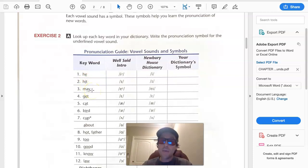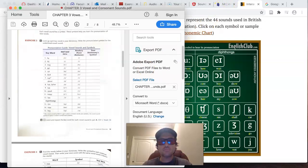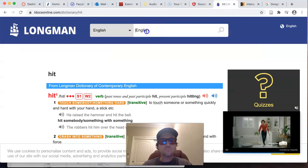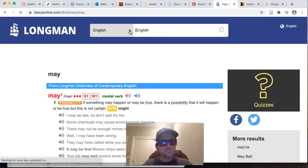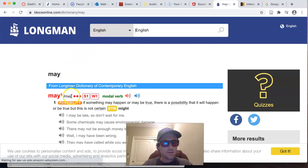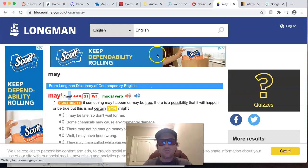May. May. Like, may I help you? May. Back to the Longman dictionary. Hmm. Interesting. So it's a cluster here. These two together. May. The A Y together. This vowel sound. You can go to your interactive chart there and find it.